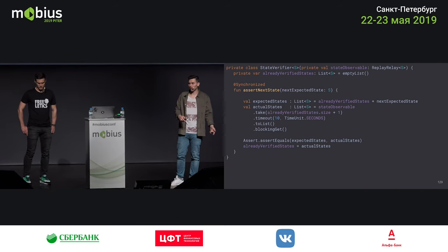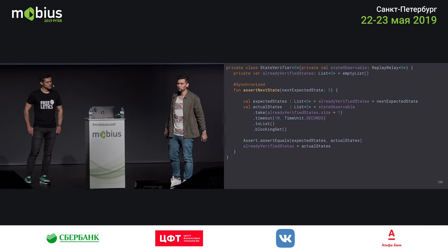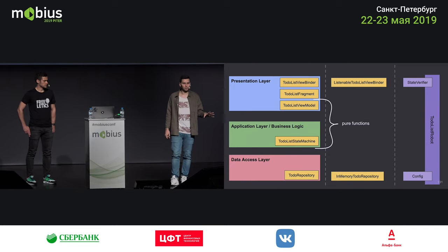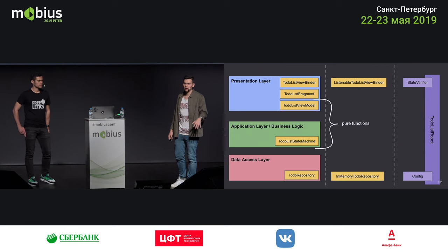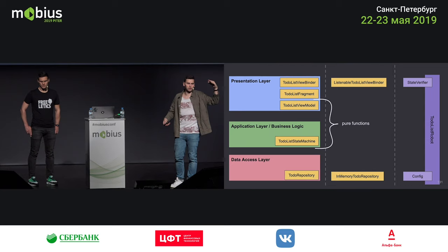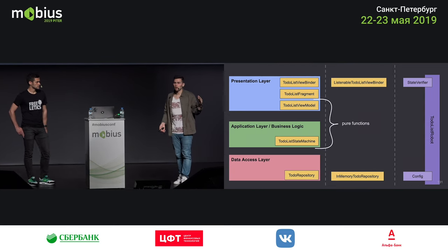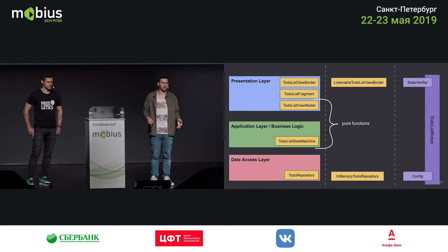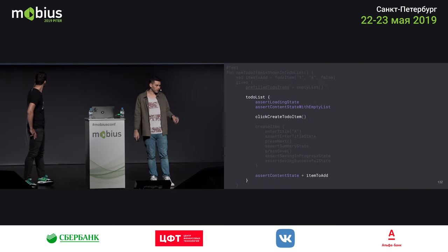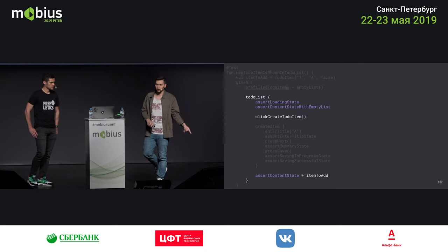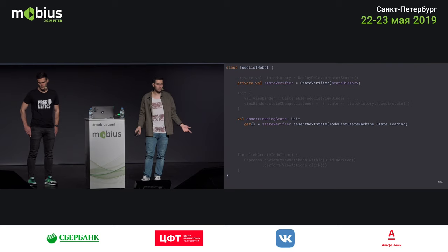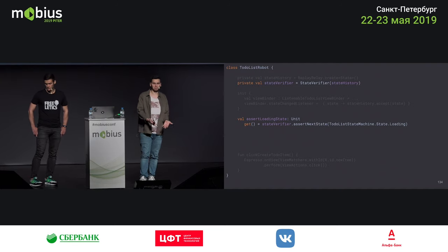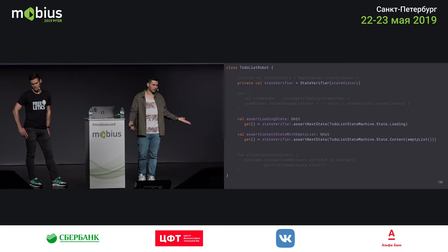So back to our example — we're still not fully there yet. There's one little trick to add: for assertLoadingState, we use or misuse this property access syntax. We call stateVerifier.assertNextState with the expected state as loading state. Similarly for state with empty list — and you get the idea. This completes the picture: we've only replaced something in the bottom layer with side effects and the top layer that interacts with the UI. Everything in between is pure functions under our full control, based on single responsibility principles, so we can write functional tests that cover all those things easily instead of writing unit tests individually.